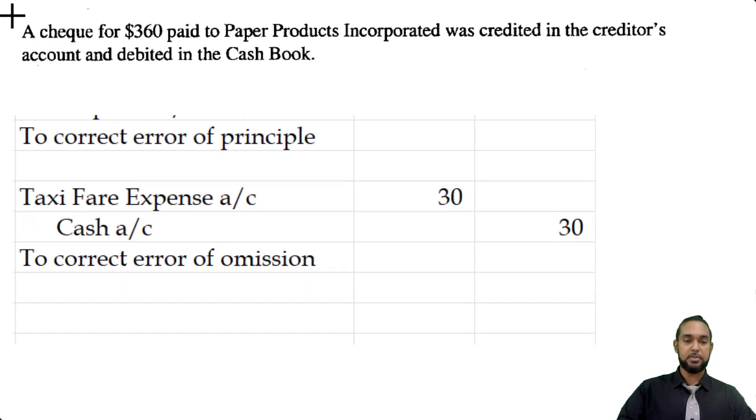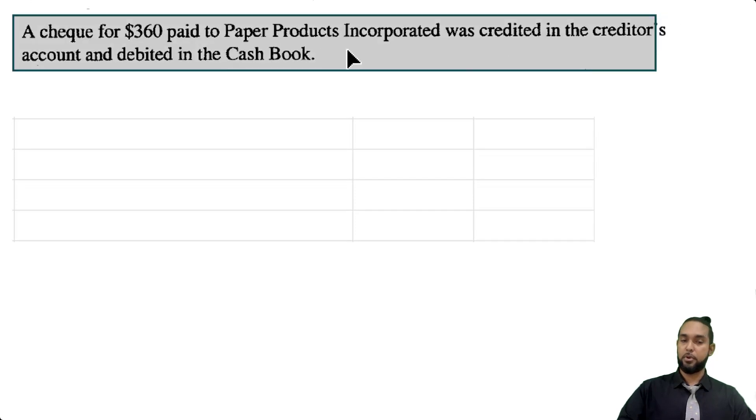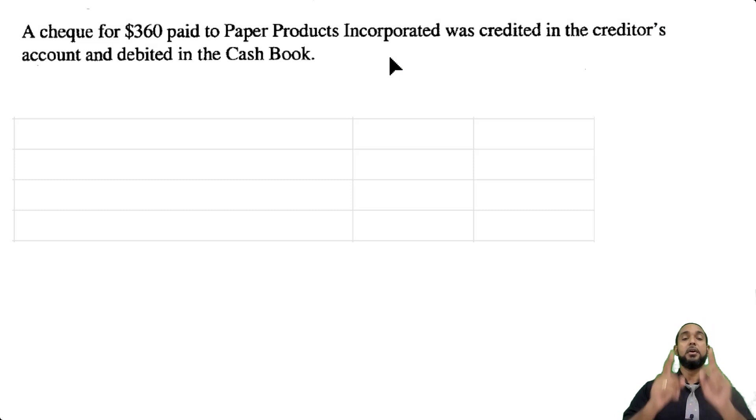And the last item says a check for 360 pay to paper products incorporated was credited in the creditor's account and debited in the cash. If you pay somebody money, a check, your bank account is decreasing, which means you're going to have to credit bank. Whoever you're paying, a creditor, you're paying off a liability, which means the liability is going down. To record a decrease in a liability, you have to debit the liability account. So we were supposed to debit paper products, the creditor, and credit cash book. But we credited the creditor and debited cash book. This is a complete reversal of entries.